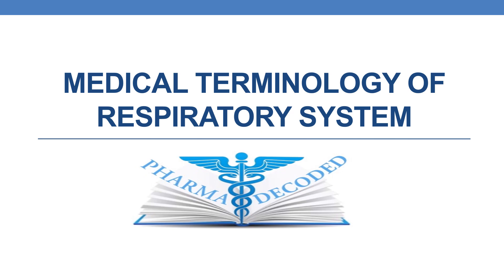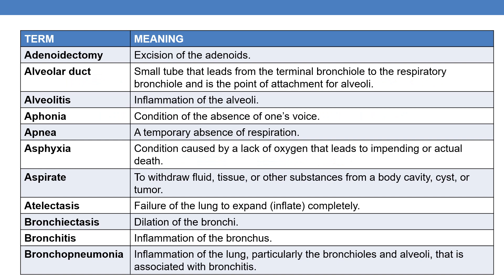Hello everyone, now let us discuss about the medical terminology of respiratory system. Coming to the first term, it is adenoidectomy. Ectomy is nothing but surgical removal. Adenoidectomy is the surgical removal of adenoids or excision of adenoids.